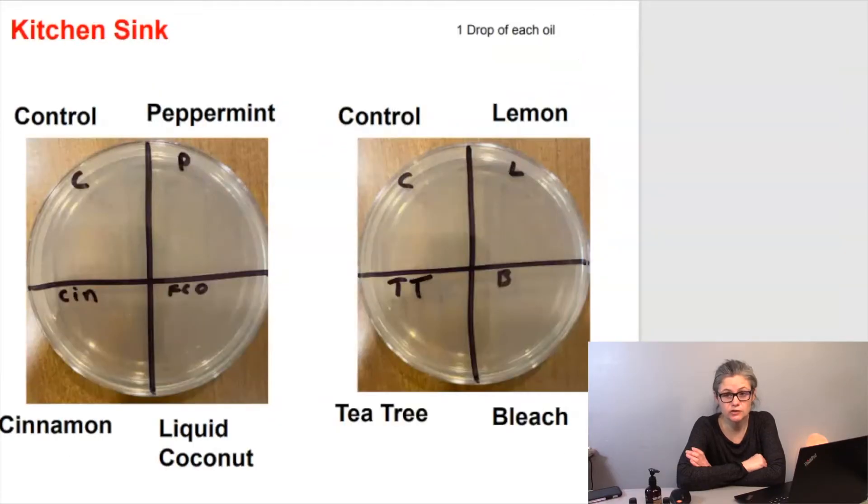So for the second test, I just used the kitchen sink for the bacteria because I'm pretty certain that my kitchen sink has lots of bacteria in it. This time, I divided the petri dishes up into four sections instead of six to give each area more space.